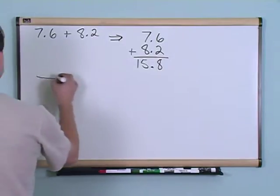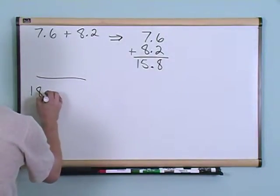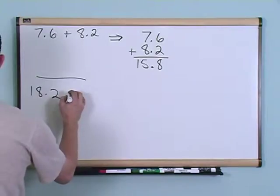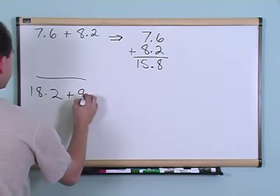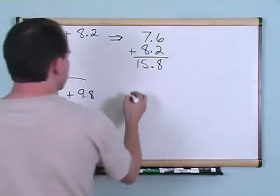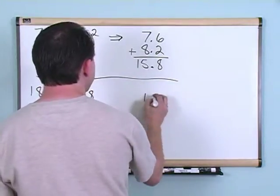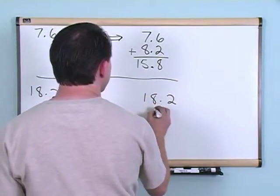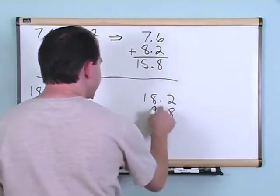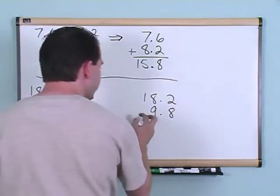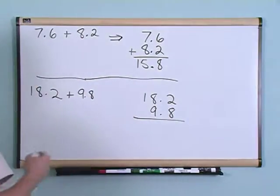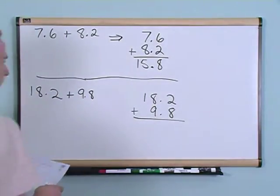What if you had something like 18.2 plus 9.8? Again, you line your decimals up and put your numbers one on top of the other, then you go ahead and add just like you would always add.